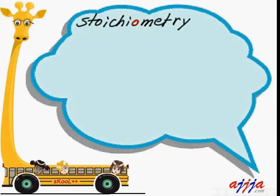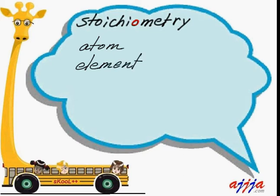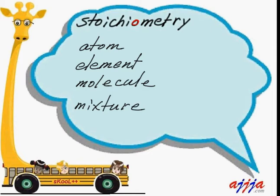Trigonometry is the study and measurement of a triangle. So what comes to mind? Smaller than an element? That's right — atom. We're going to talk about the difference between atom and element. A few elements together make a molecule, and so many molecules together make a mixture — like salt water or air.